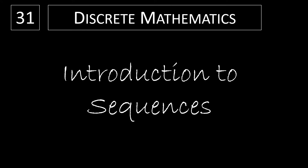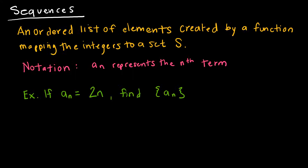This video is a great introduction to sequences. A sequence is simply an ordered list of elements created by some function that maps the integers to a set S. So a sub n represents the nth term — that's a subscript. If they give me something like a sub n = 2n, this is telling me that in order to find the values of the sequence, all I have to do is take 2 times n, where n represents whatever term I'm looking at.